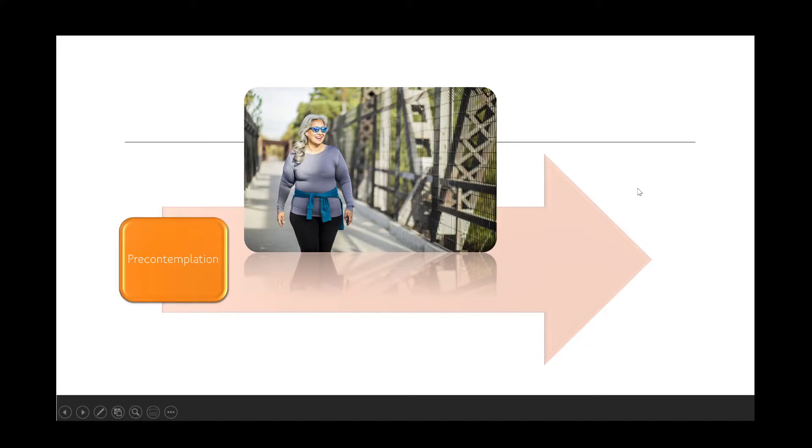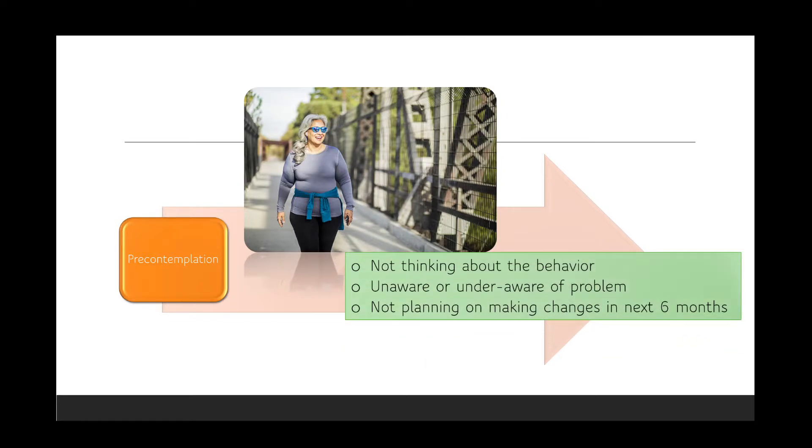So this is generally a directional model where we look at a person's progression from one stage to the other. Our first stage is that of pre-contemplation. A person who's in the pre-contemplation stage is just going about their life. They're not thinking about a specific behavior. They are likely unaware or under-aware of any problems their behaviors might be likely to lead to. And because of this, they are not planning on making any significant changes in the next six months.